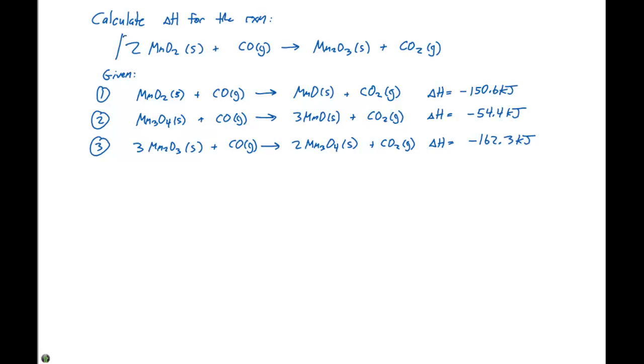Let's first look at our reactants, which is MnO2. This MnO2 only shows up once throughout our entire reaction sequence, and it shows up here. So this is going to tell us that we're going to need two times reaction number one. If we also look at the Mn2O3, this also shows up just one time down here. But we have a different amount of our Mn2O3 and it's on the other side of the reaction. So we need to take a third of this reaction and we're also going to need to reverse it.